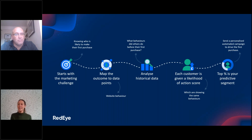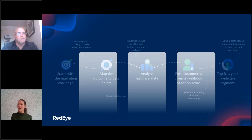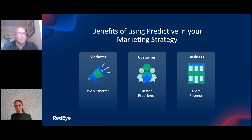Predictive essentially helps you get more out of the customer data that you already have, because the data is used in a different way to what marketers do currently. Currently we use data to send a campaign — reacting to a specific behaviour or action — which is great. But this is using your data a step further to influence a future behaviour. And if we think about the benefits more broadly, we can view them in three ways: the marketer, the customer, and the business.